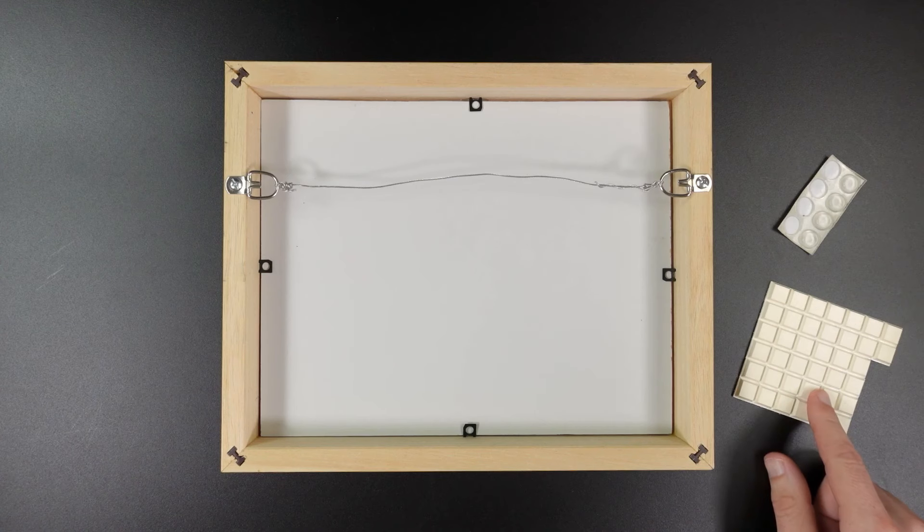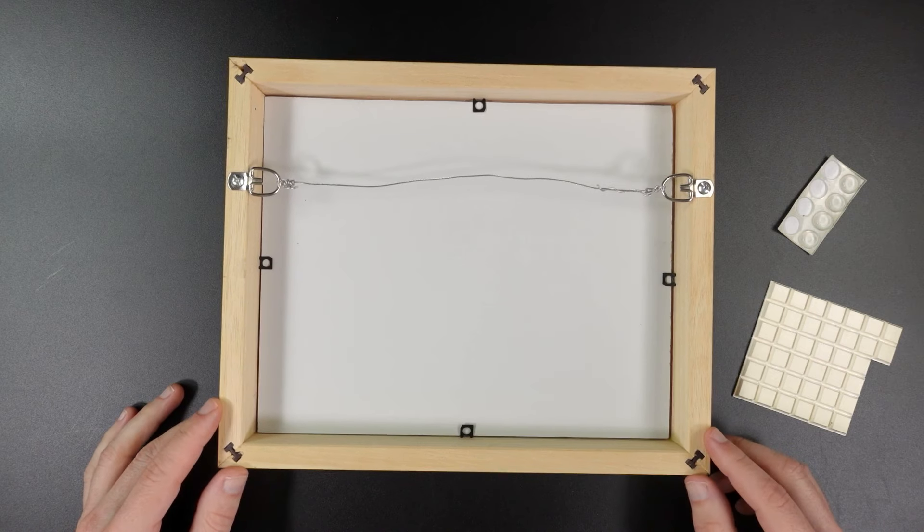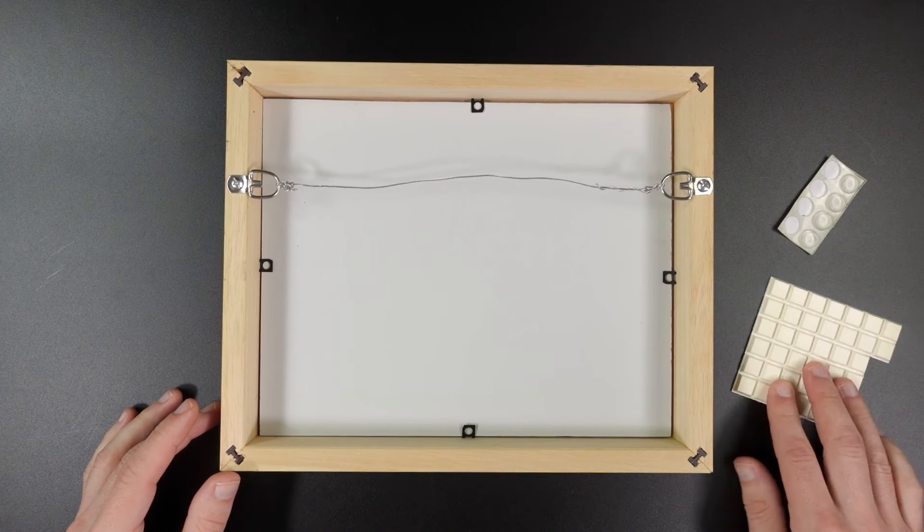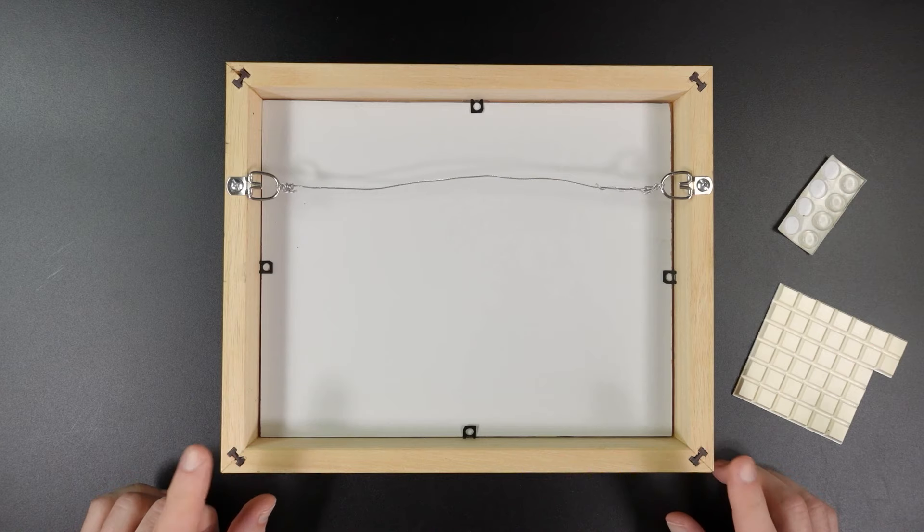In my previous video I used these white bump-ons and these are for the corners. You put them on the four corners and it helps protect the wall. It also prevents it from sliding around too easily on the wall because it's rubber and it grips the wall a little bit better. And another reason why you want to apply them to the back of the frame is to help increase the airflow.